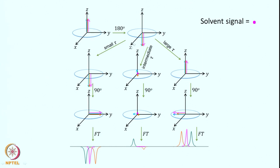For a small tau the entire magnetization is still along minus z, and if you apply a 90-degree pulse, the magnetization rotates into the transverse plane along the negative y-axis. Now suppose you adjust tau so that the water magnetization has come to zero during recovery, the blue line has gone to the positive axis, and the other lines are still on the negative axis but substantially recovered toward the z-axis.